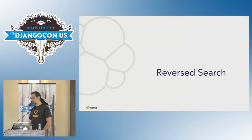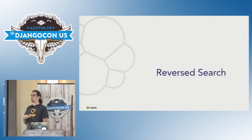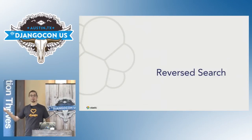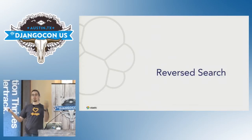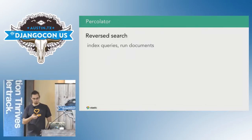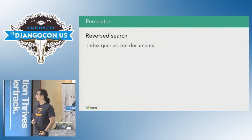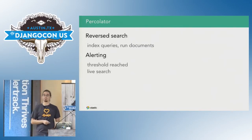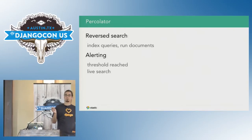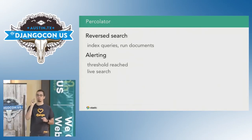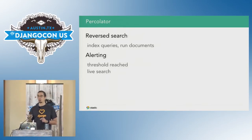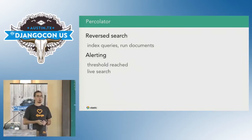Another interesting use case revolves around reverse search — what we call the percolator. It is exactly what it sounds like. In the normal world, you index your documents and then run your queries. With the percolator, you index your queries and then run your documents. This is useful for alerting. If you have a classifieds website with a saved-search feature and nothing matches yet, the user can say: save this search, and whenever a new document matches it, send me an email. Normally that's a fairly hard problem — with the percolator, it comes out of the box.